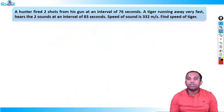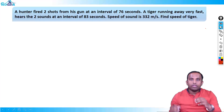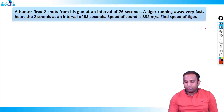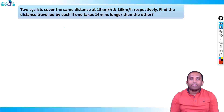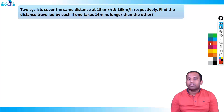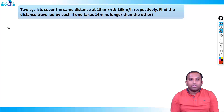Now let's go to some easier questions with a different concept. Two cyclists cover the same distance at 15 km/h and 16 km/h respectively. Find the distance traveled by each if one takes 16 minutes longer than the other. I'll discuss two methods for this question.